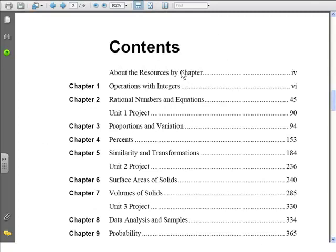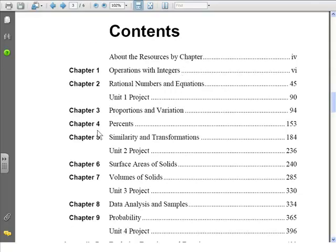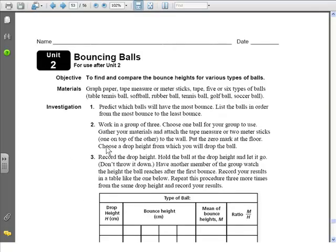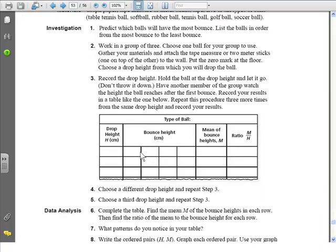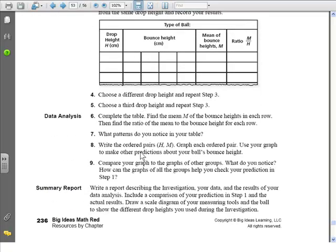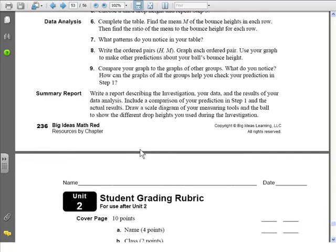If you look back at the table of contents, you'll see that there are several unit projects. Let's take a look at the Unit 2 project on page 236. The unit project summarizes the key concepts of the unit. It requires students to investigate a concept, gather and analyze data, and summarize the results.